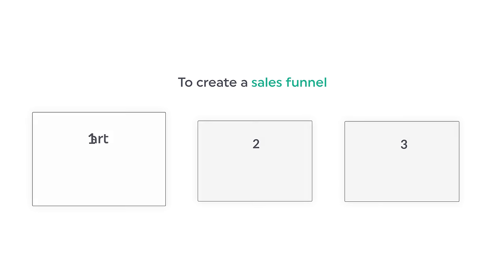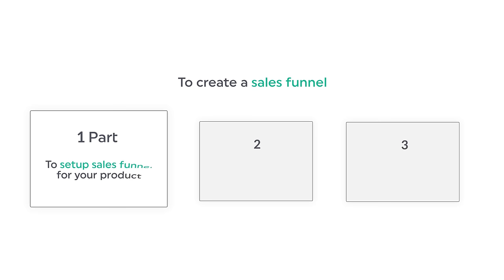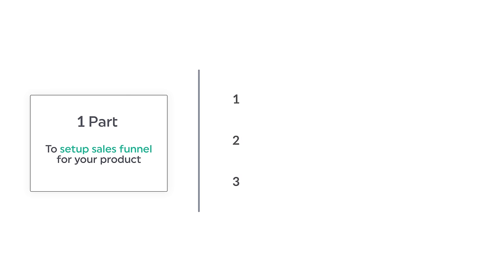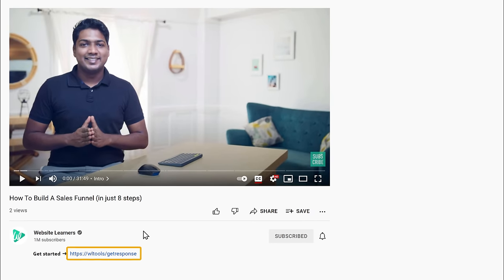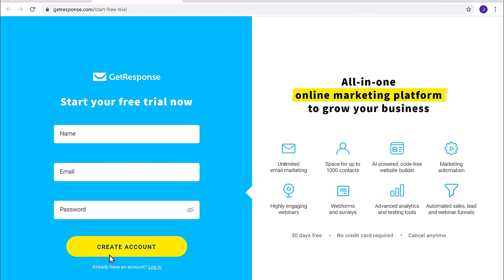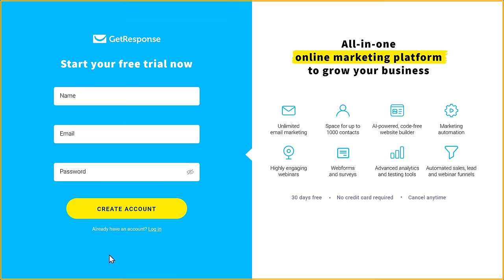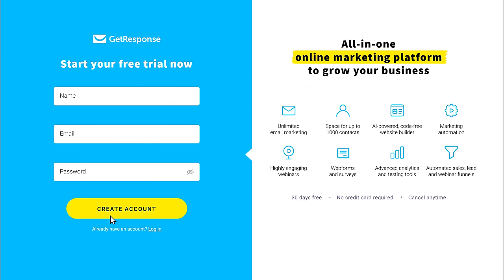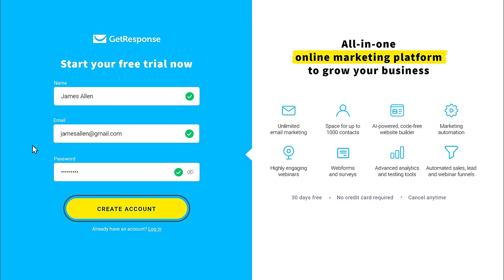Now I want to sell a product which is an ebook. To create the sales funnel, we are going to do three parts. The first part is to set up a sales funnel for your product, and we are going to do this in three steps. The first step is to create an account in GetResponse, which is the site that is going to help us create the sales funnel. So to create the account, just click the link below this video and it will take you to this page. Now fill up these details and click create account.